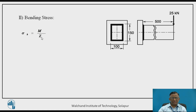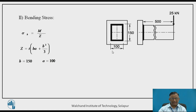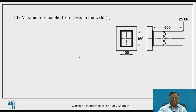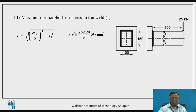The bending stress is calculated as sigma_B = M / Z, where Z for this box section from the standard table is given as T·(B·A + B²) / 3 with B = 150 mm and A = 100 mm. Substituting these values, Z is obtained and the bending stress is found to be 550.55 / T N/mm². With tau_1 and sigma_B known, the maximum principal shear stress tau = sqrt((sigma_B / 2)² + tau_1²), which gives tau = 282.24 / T N/mm².